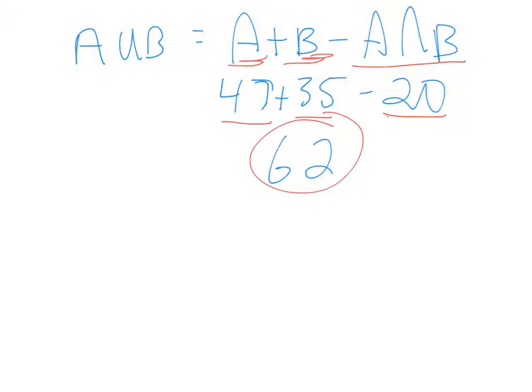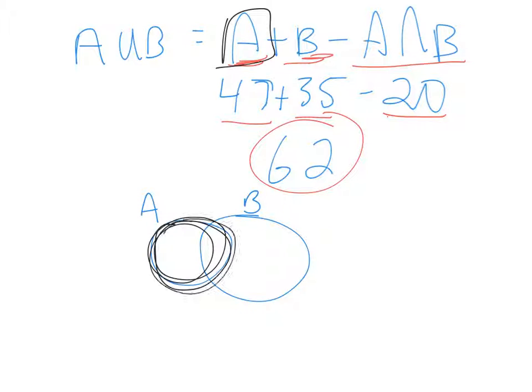I hope that makes sense. If you think about it in terms of what we're counting, when we count A, we get all of this circle. When we count B, we get all of this circle. So we've counted their intersection point twice, which is why you have to get rid of it.